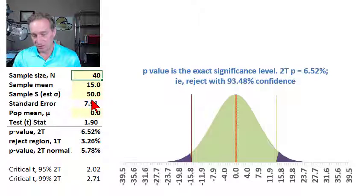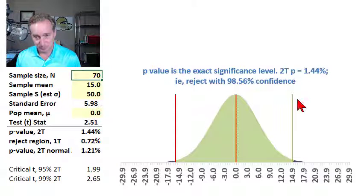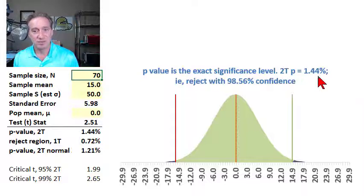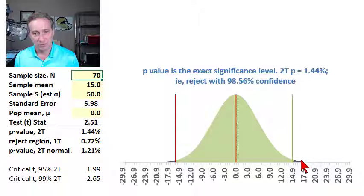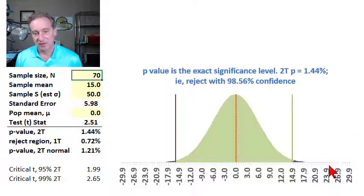if we were to increase the sample size to 70, then the two-sided p-value drops to 1.44%, and we could reject with 98.56% confidence.